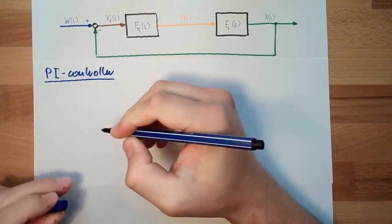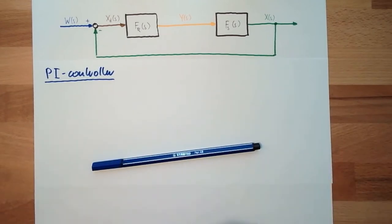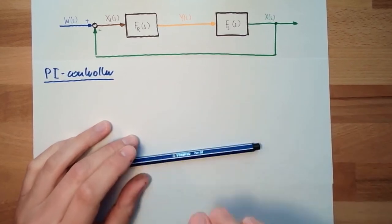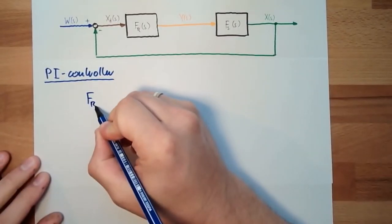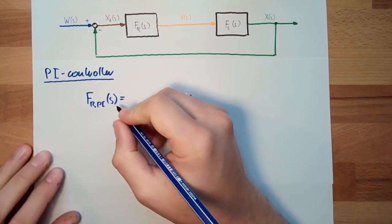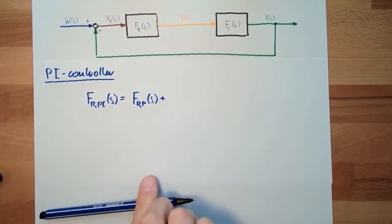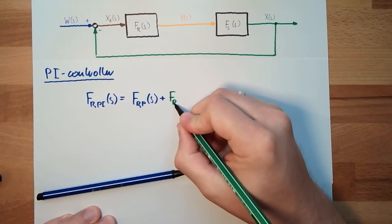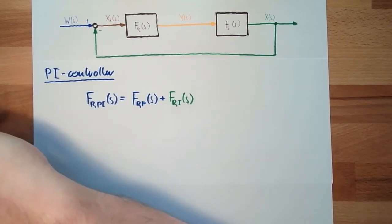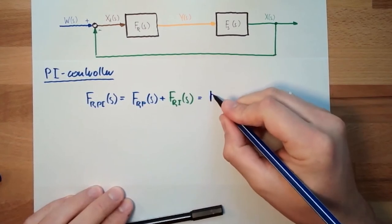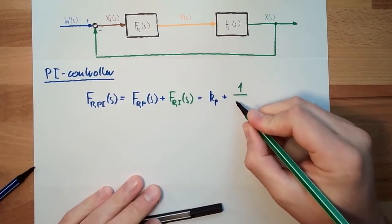PI-controllers are a very, very common type of controller. Basically, they are parallel of P-controller and I-controller. So, the transfer function F_R-PI is the sum of a proportional controller plus the transfer function of the I-controller, 1 divided by sT_0.